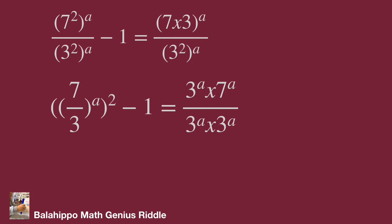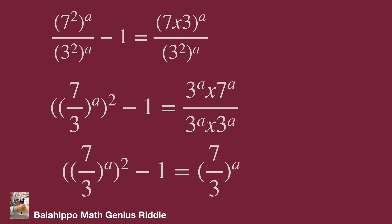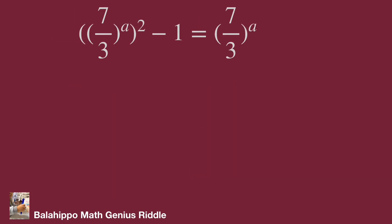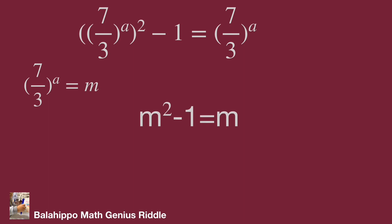Simplify the equation and generate the factor 7 over 3 power of a. We get the new equation: 7 over 3 power of a, squared, minus 1 equals 7 over 3 power of a. To make it easy to identify, we define 7 over 3 power of a equal to m. Substituting gives us m squared minus 1 equals m, which rearranges to m squared minus m minus 1 equals 0.